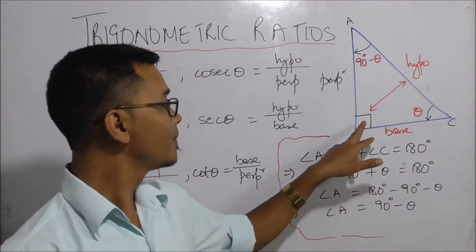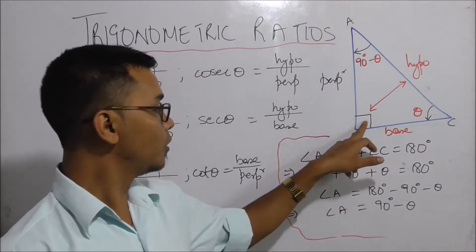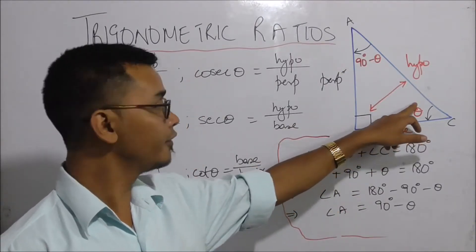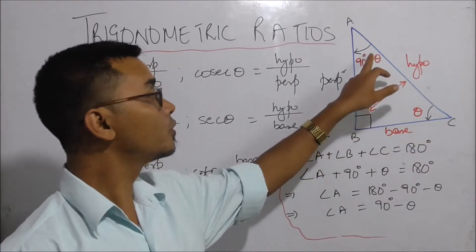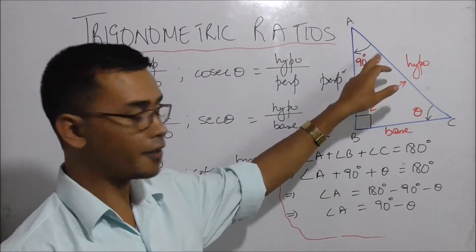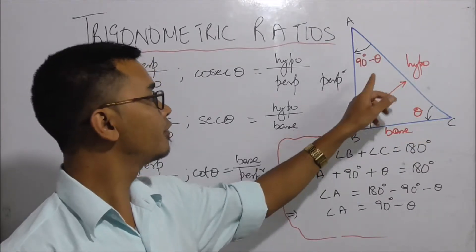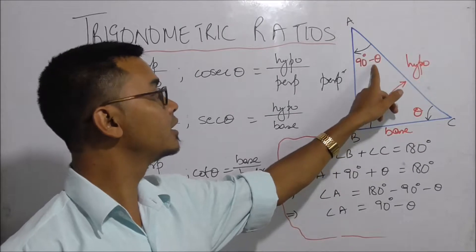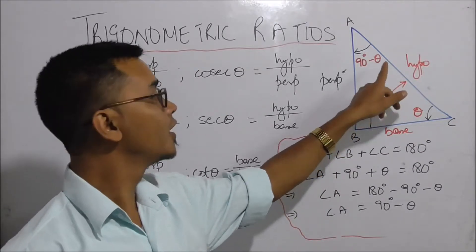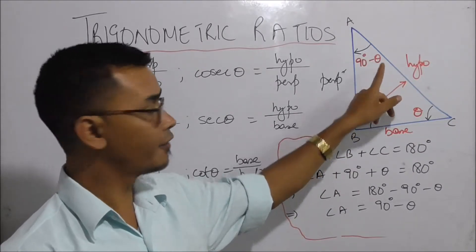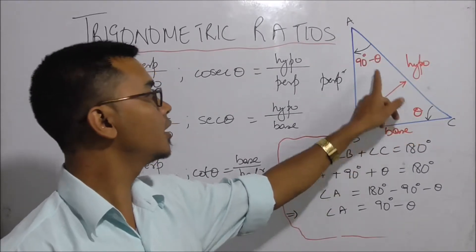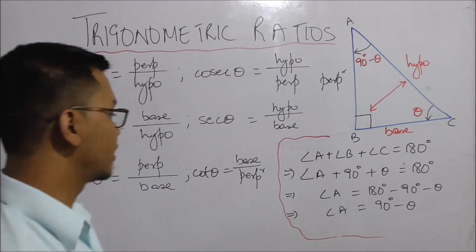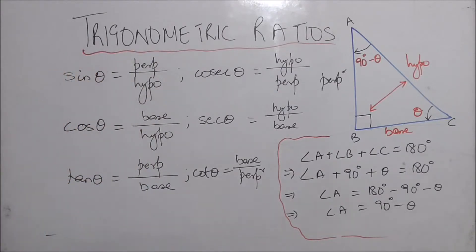For example, if theta is 45 degrees, then the complementary angle would be 90 minus 45, which is 45 degrees.